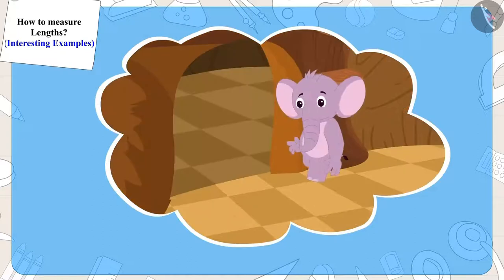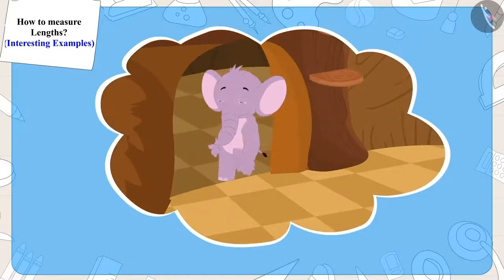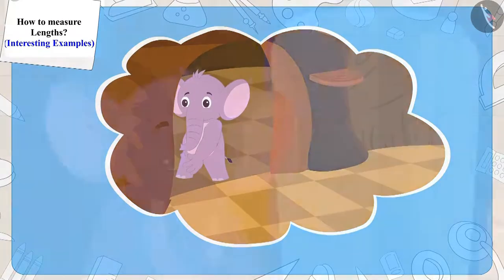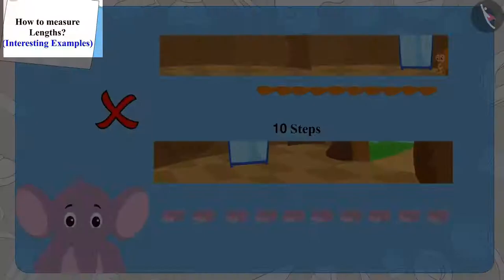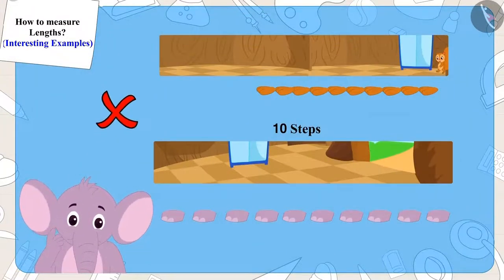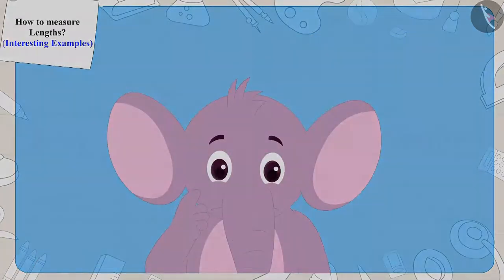So when Appu walked ten steps straight from the door he reached the other room. Appu understood Chanda's mistake but how can we correct this mistake? Let us see what Appu says to Chanda.